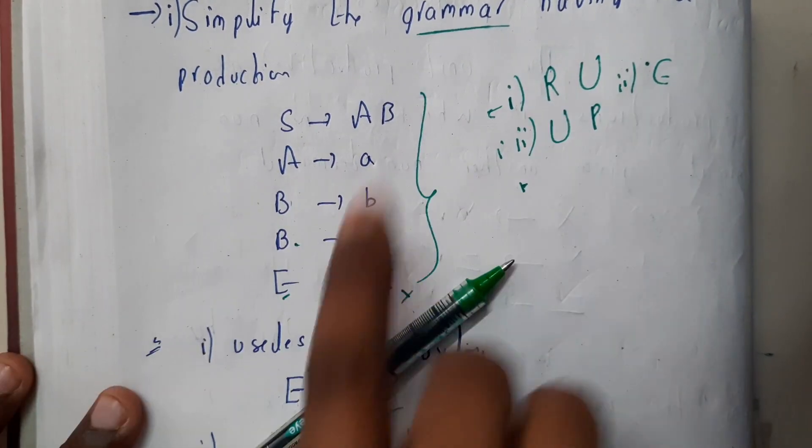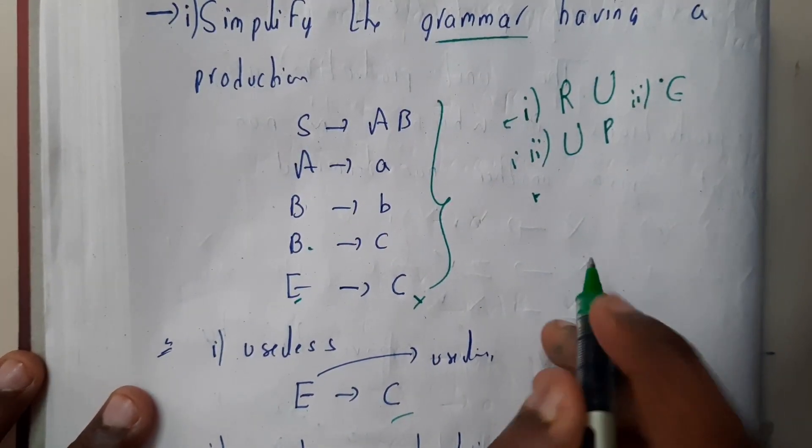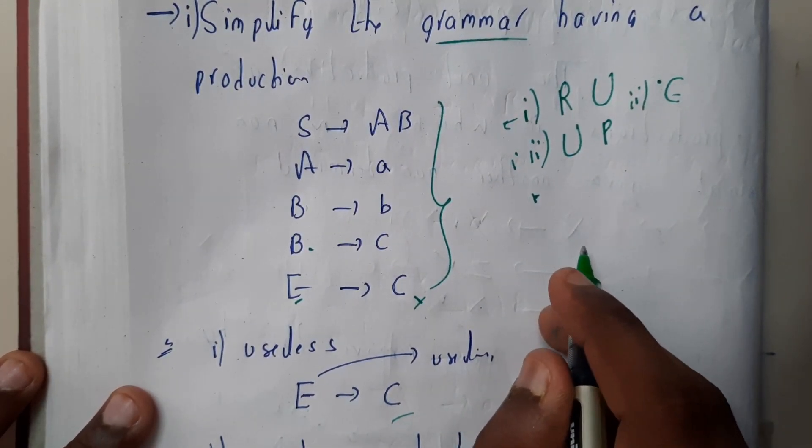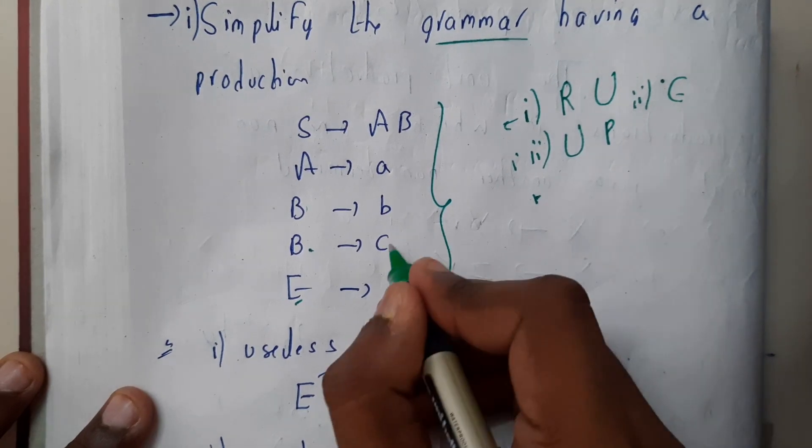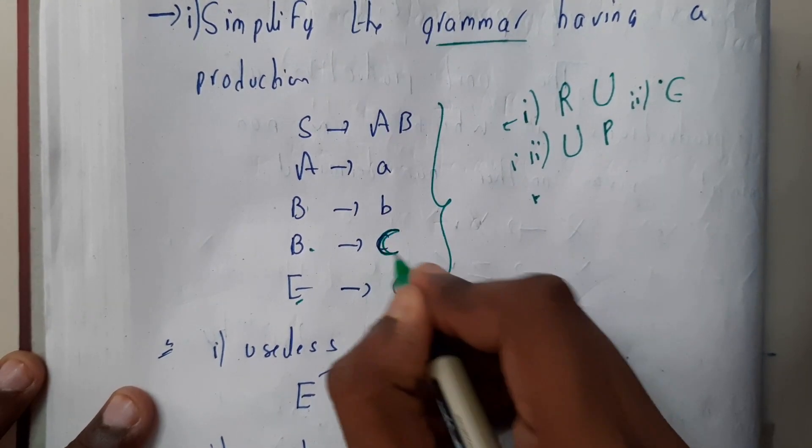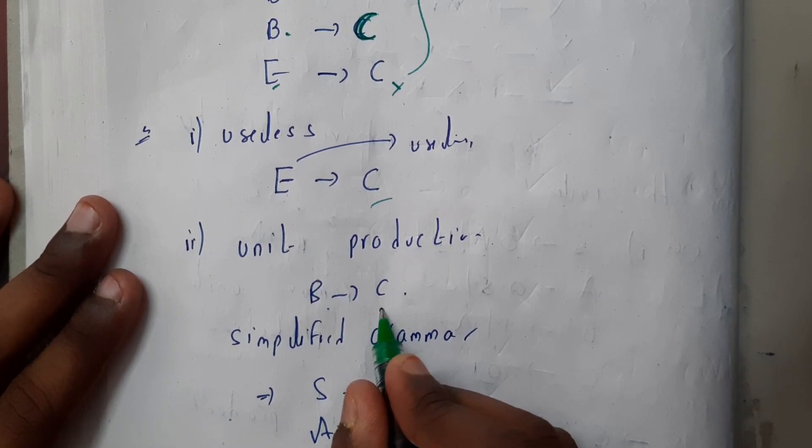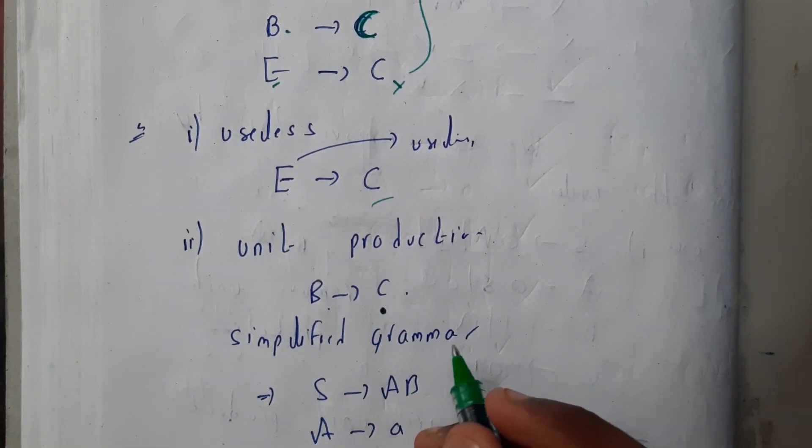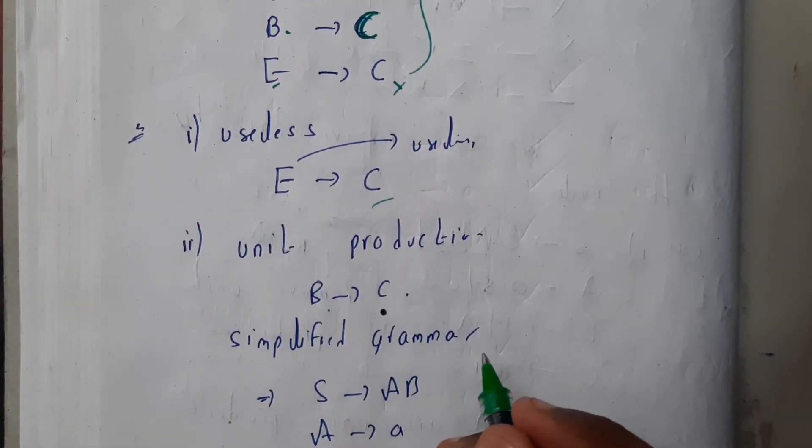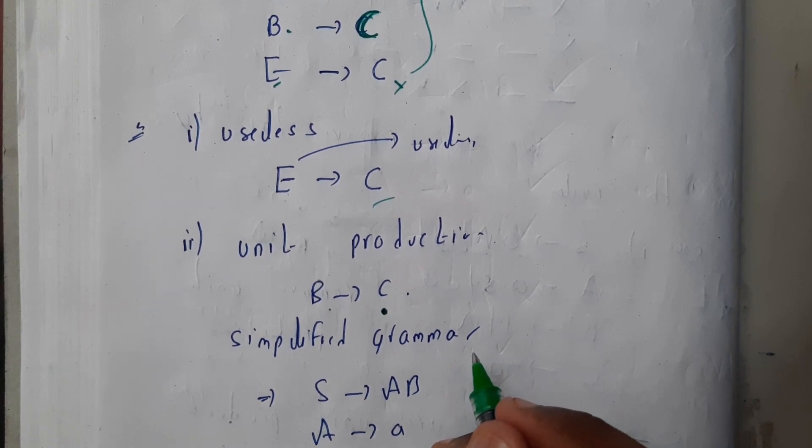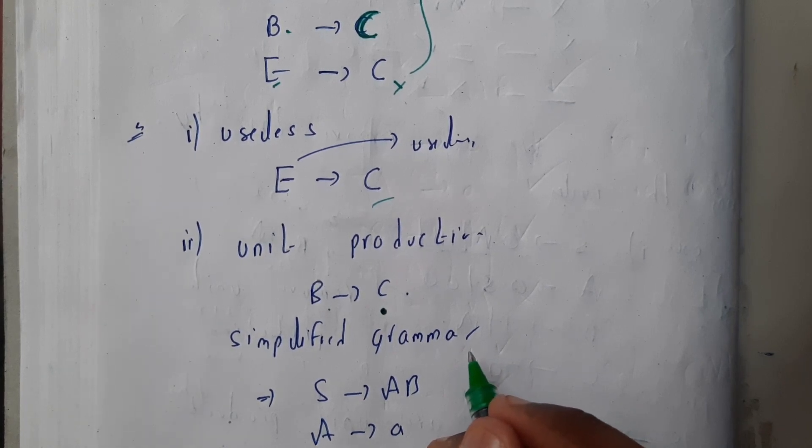No, so the second step is already done. Third step: unit productions. Are there any unit productions, guys? Yes, we are having B tends to C, right? That's capital C. So in place of C, can we substitute anything?